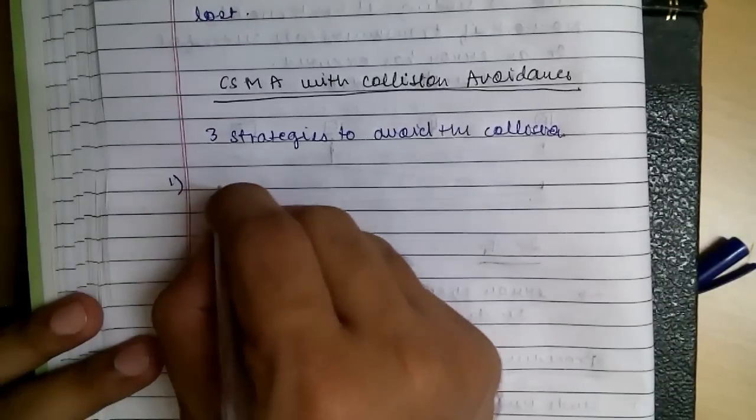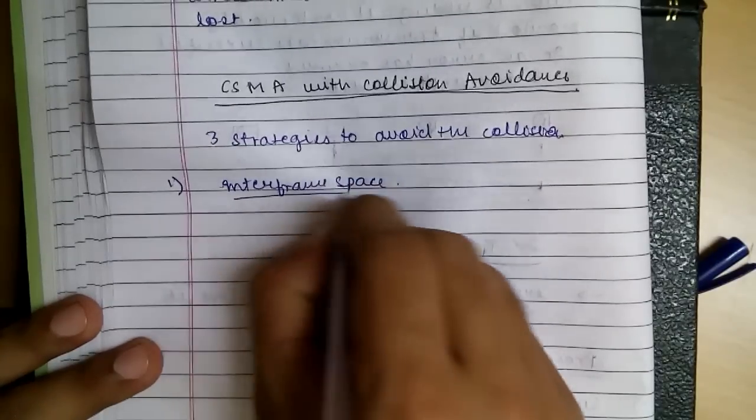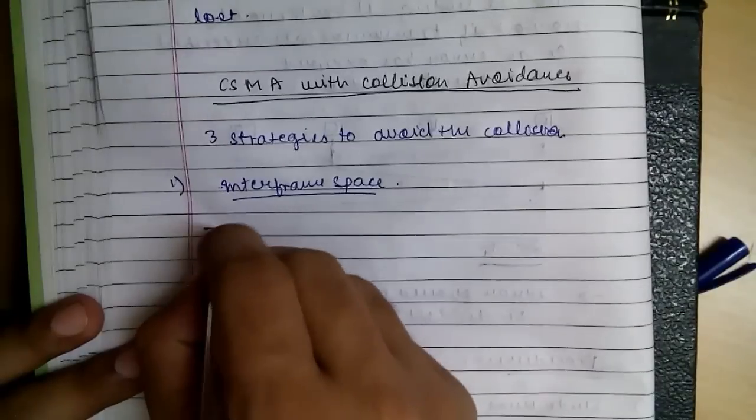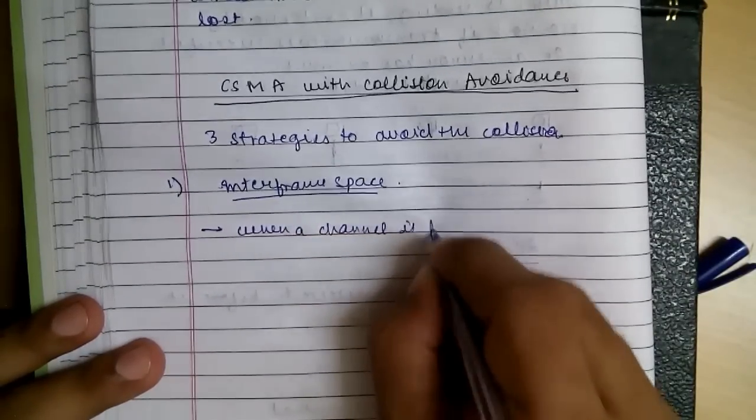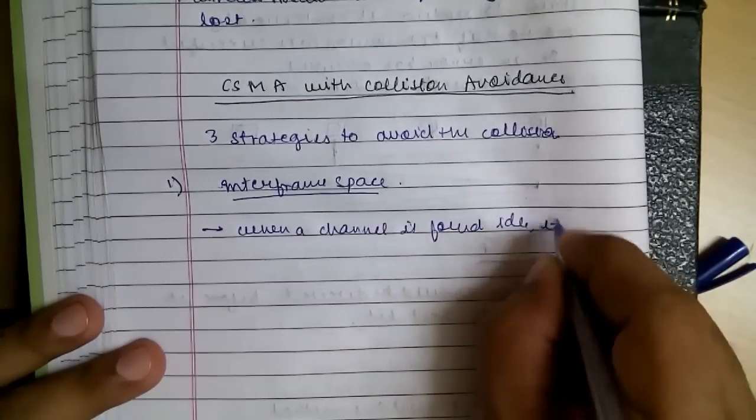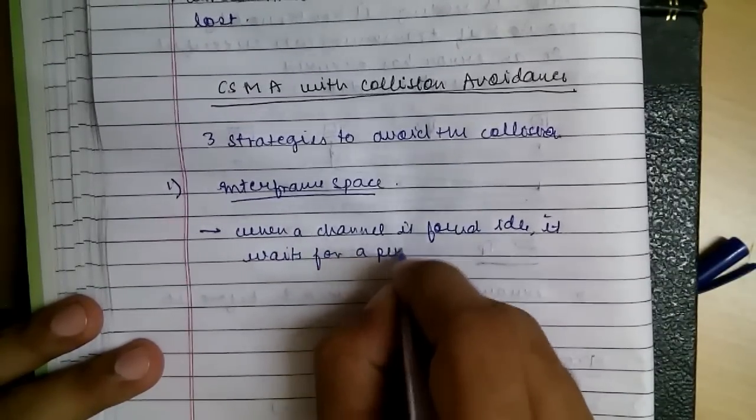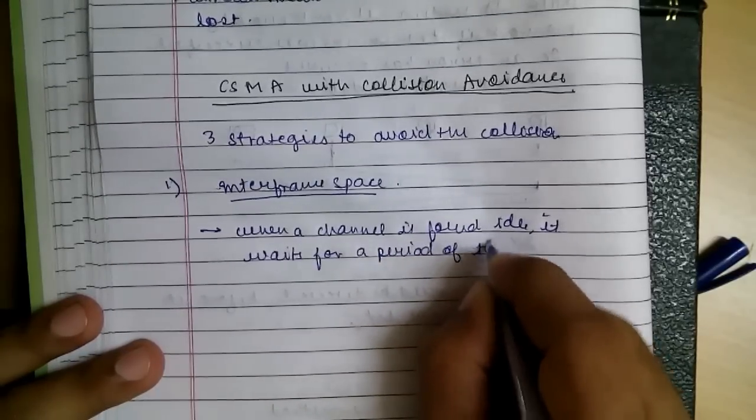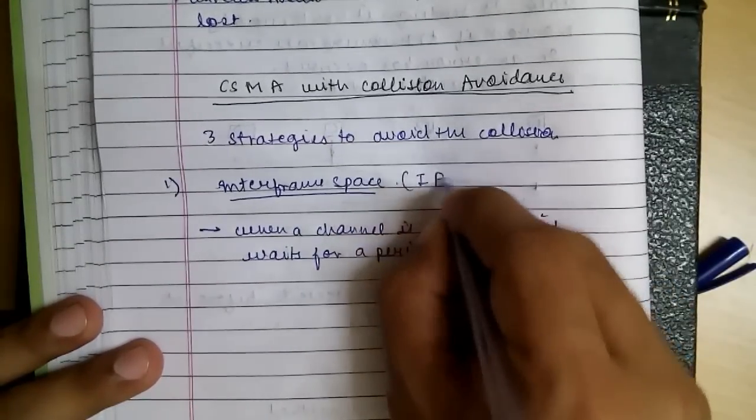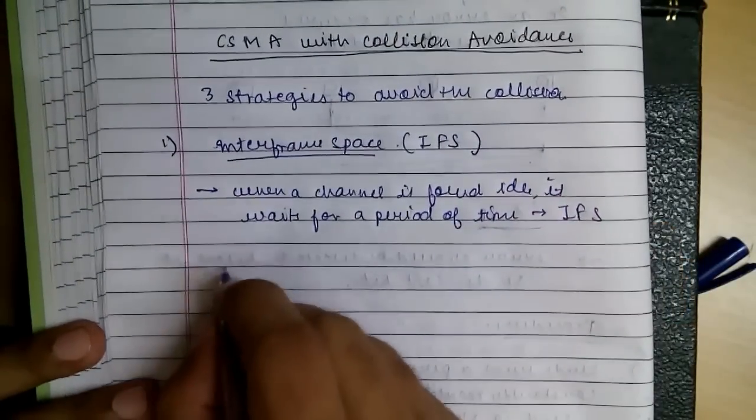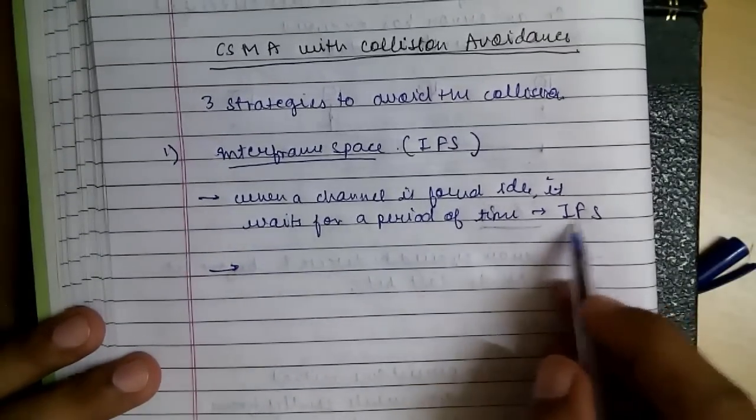The first one is inter-frame space. What this is: when a channel is found idle, it waits for a period of time. The period of time is called IFS, that is inter-frame space.